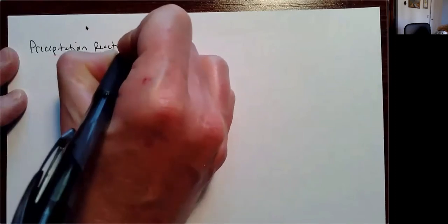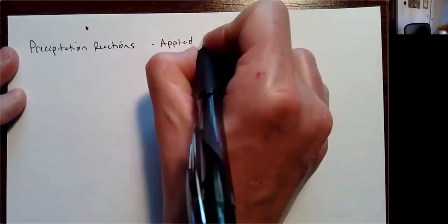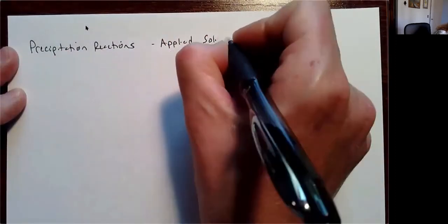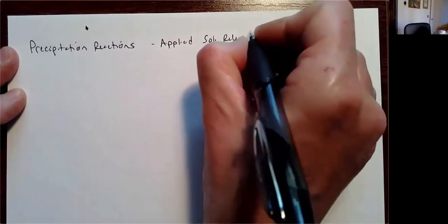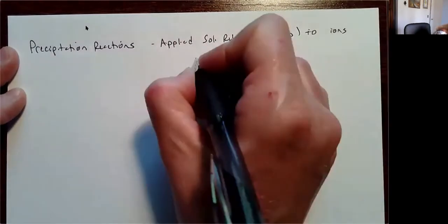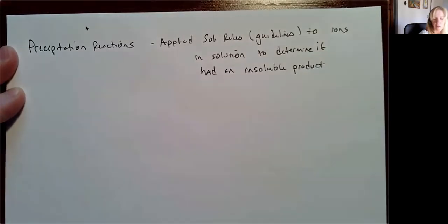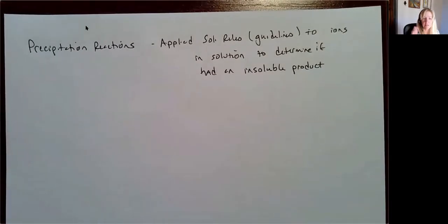You learn solubility rules when you're doing precipitation reactions. We applied these solubility rules — which we're going to call guidelines now — to the ions in solution to determine if you have an insoluble product. In a precipitation reaction, that's what we did.